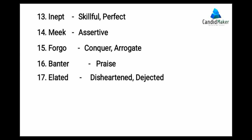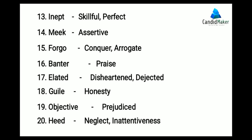And its antonym is praise. This means to compliment someone, to appreciate. Next is elated. Elated means to be proud, enthusiastic, excited. And its antonym is disheartened or dejected, meaning discouraged, unenthusiastic. Next is guile. Guile means trick or deception, cunning. And its antonym is honesty, meaning honest. Next is objective. Objective means goal or purpose. And its antonym is prejudiced. Prejudiced means bias. Next is heed. Heed means to be careful, to pay attention or to take care. And its antonyms are neglect or inattentiveness. This means carelessness or not paying attention.